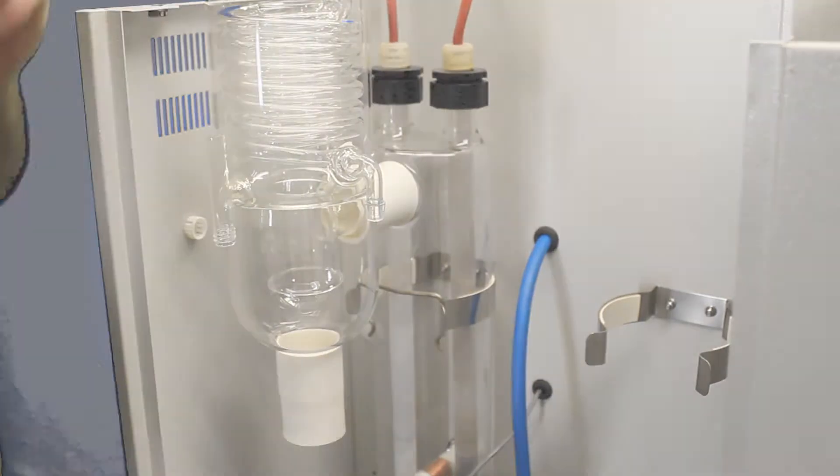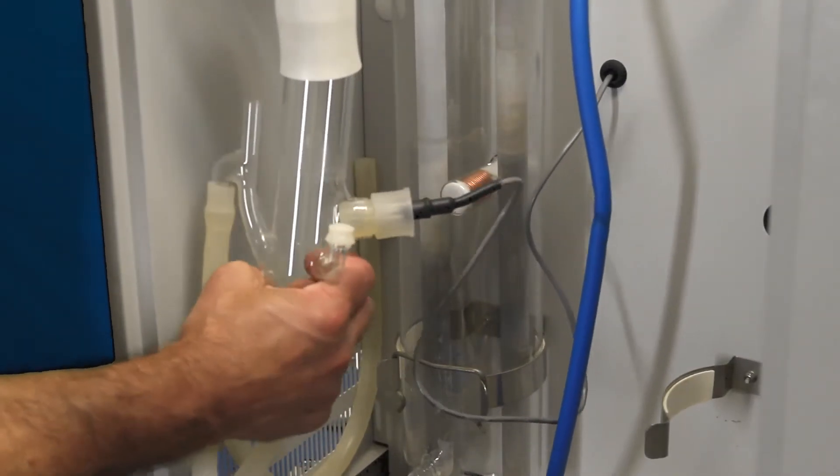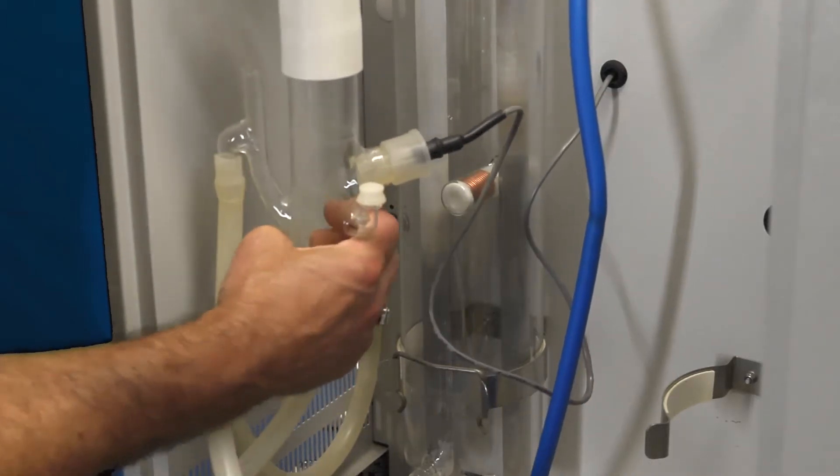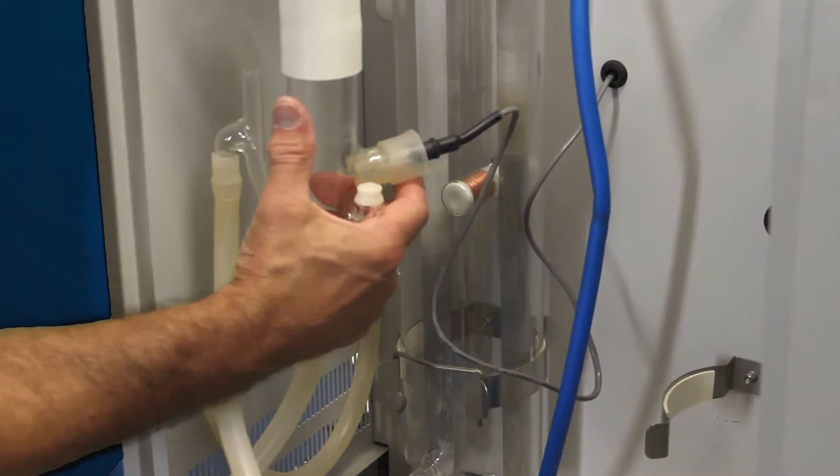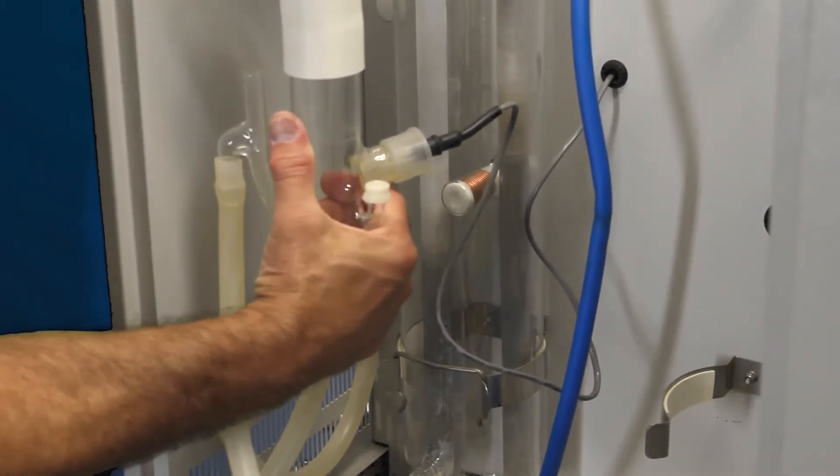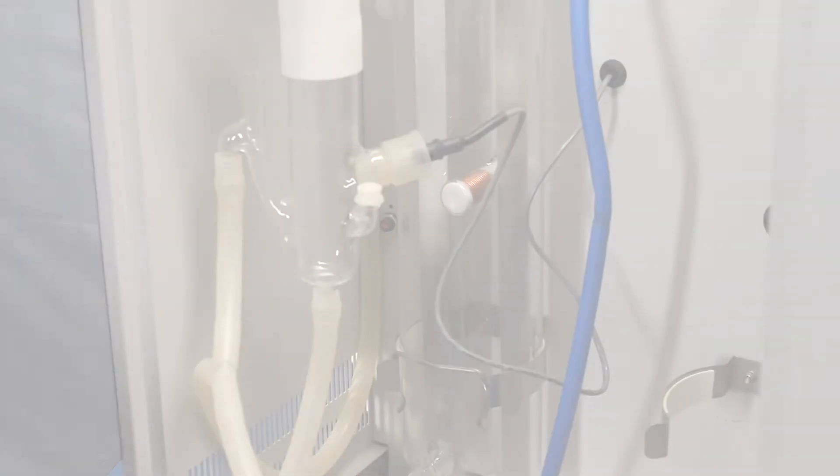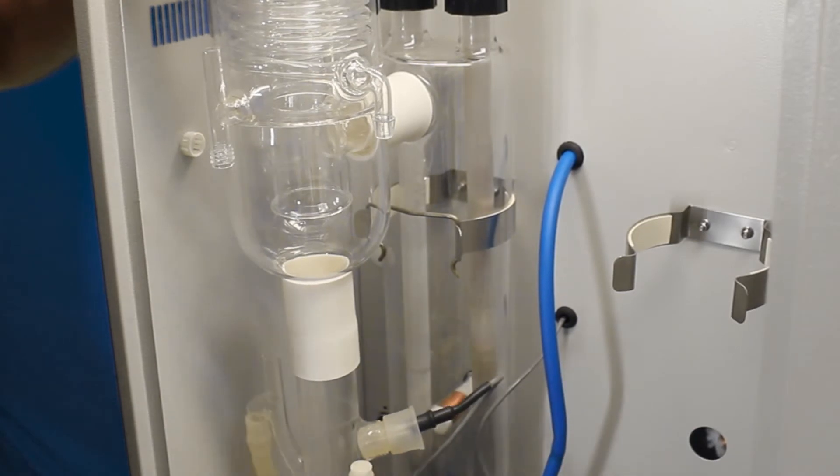Take our constant level device. Slide that back up inside. You want to leave yourself about a sixteenth of an inch gap because you don't want a glass-to-glass connection. Slide it up until you get just about a sixteenth of an inch gap right in there. Turn that to the proper position.